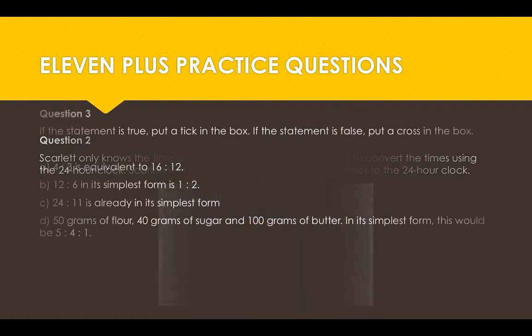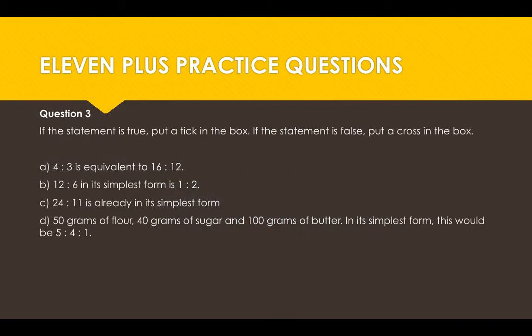Question 3: if the statement is true put a tick in the box. If the statement is false put a cross in the box. 4:3 is equivalent to 16:12, true or false. 12/6 in its simplest form is 1/2. 24/11 is already in its simplest form.